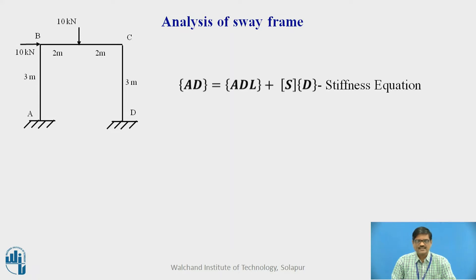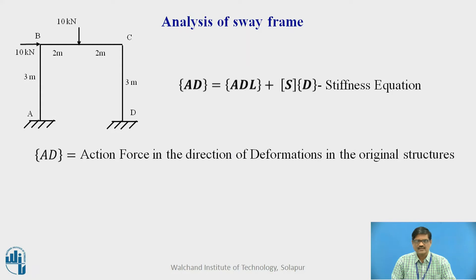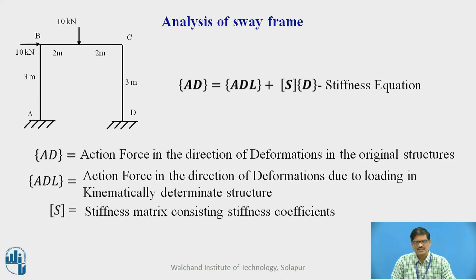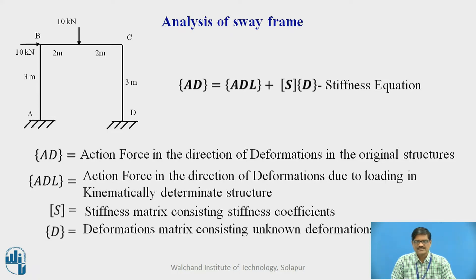For the analysis of this sway frame, we shall use the stiffness equation: Ad = AdL + S·D, where Ad is the action force in the direction of deformations in the original structure, AdL is the action force in the direction of deformations due to loading in the kinematically determinate structure, S is the stiffness matrix, and D is the deformation matrix.